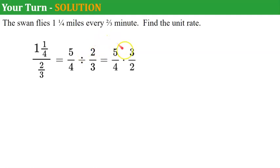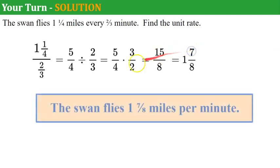Let's multiply. Five times three is fifteen. Four times two is eight. So rewrite this as a mixed number. We know that 1 and 7/8, eight goes in once with seven left over. So the swan flies 1 and 7/8 miles per minute.